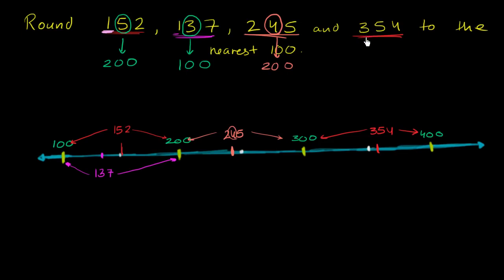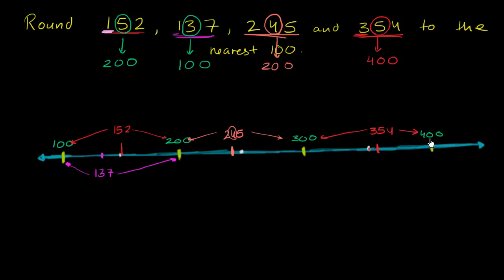If you're rounding to the nearest 100, you look at the tens place — one place to the right of the place you're rounding to. If the tens digit is 5 or larger, you round up. Here the tens digit is 5, so we round up to 400. The rule is especially valuable right at 350 — you'd need it to say look at the 5 and round up. But 354 is also closer to 400 than to 300: it's 54 away from 300 and only 46 away from 400. So it makes sense to round up to 400.